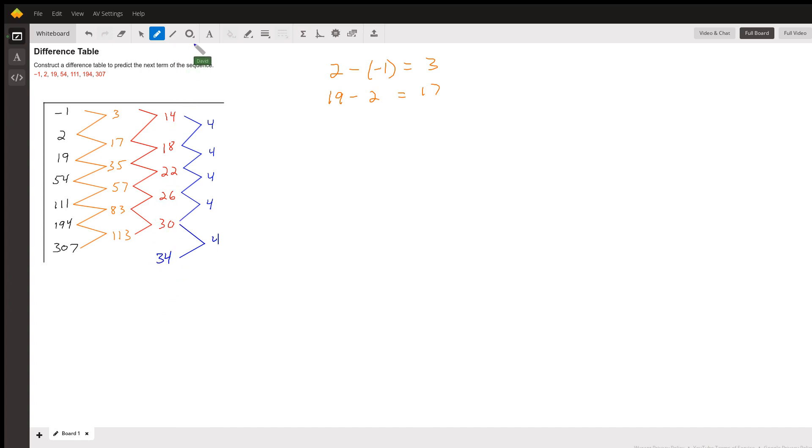And notice that the next column we're going to do, we know that something minus 113 is going to give us 34. So to find that something that goes into this box here,